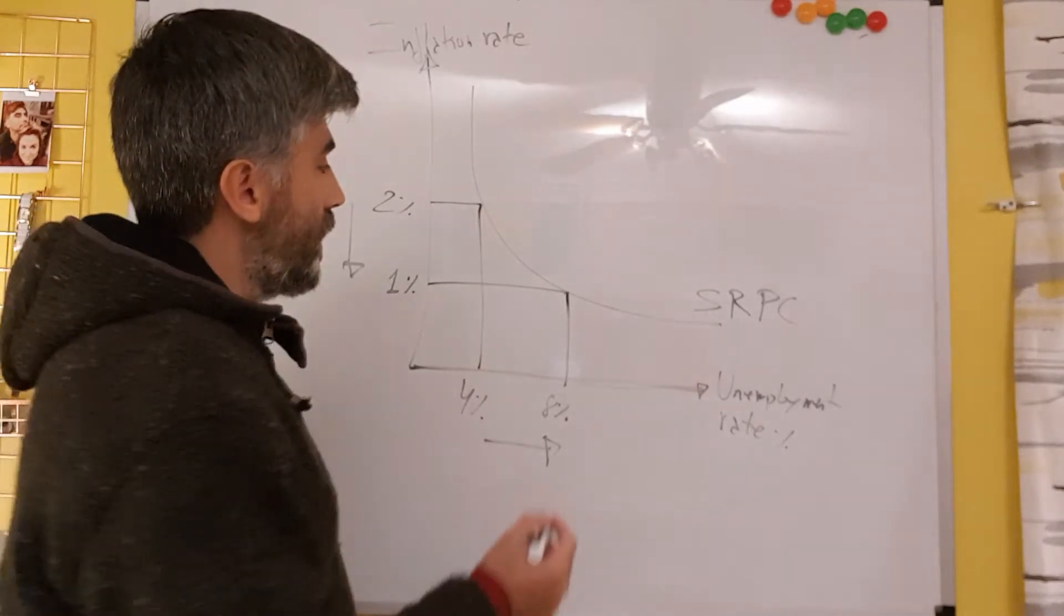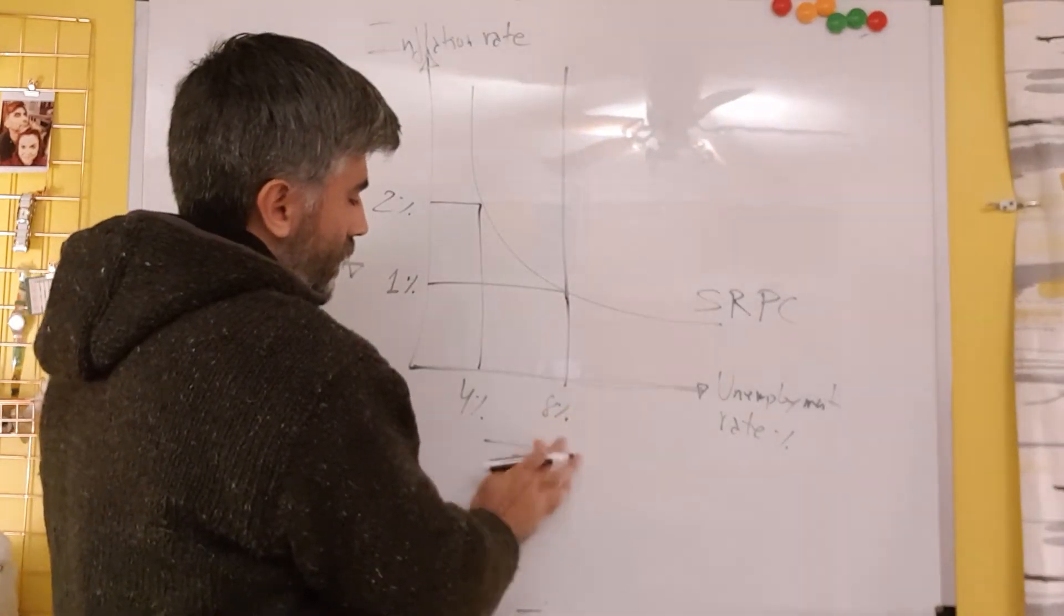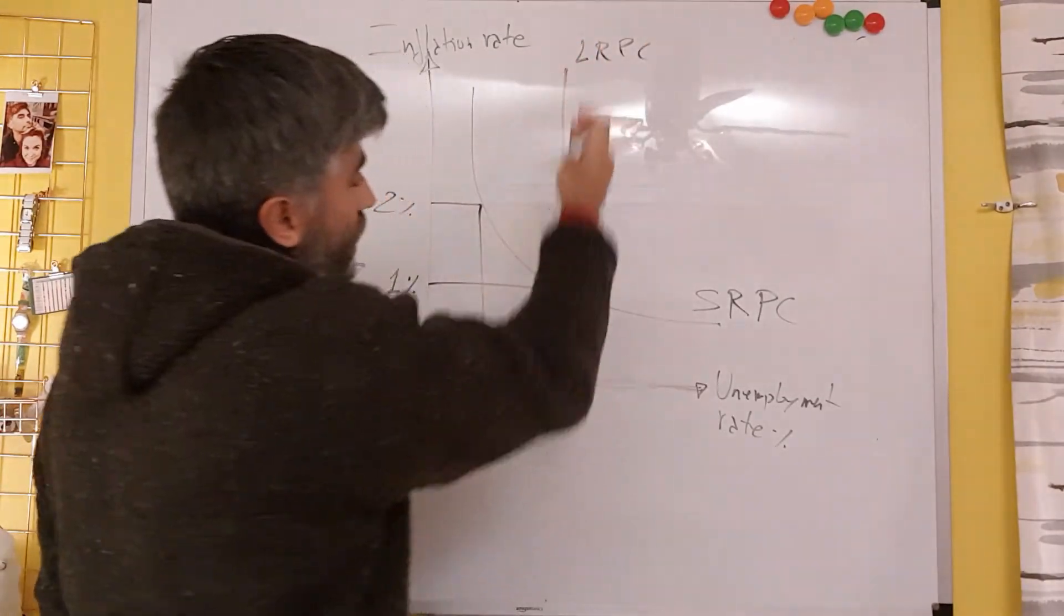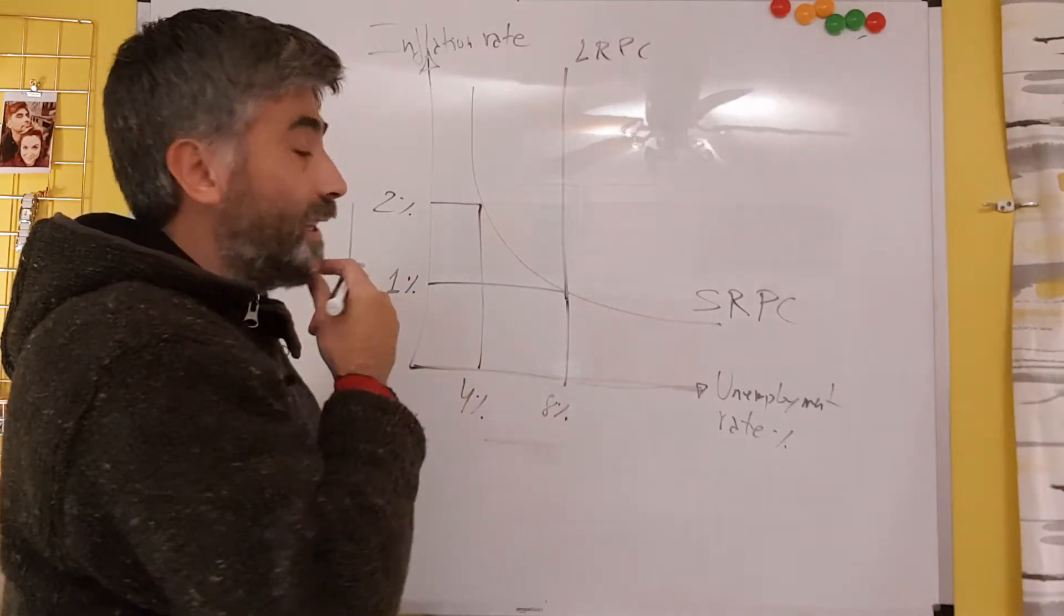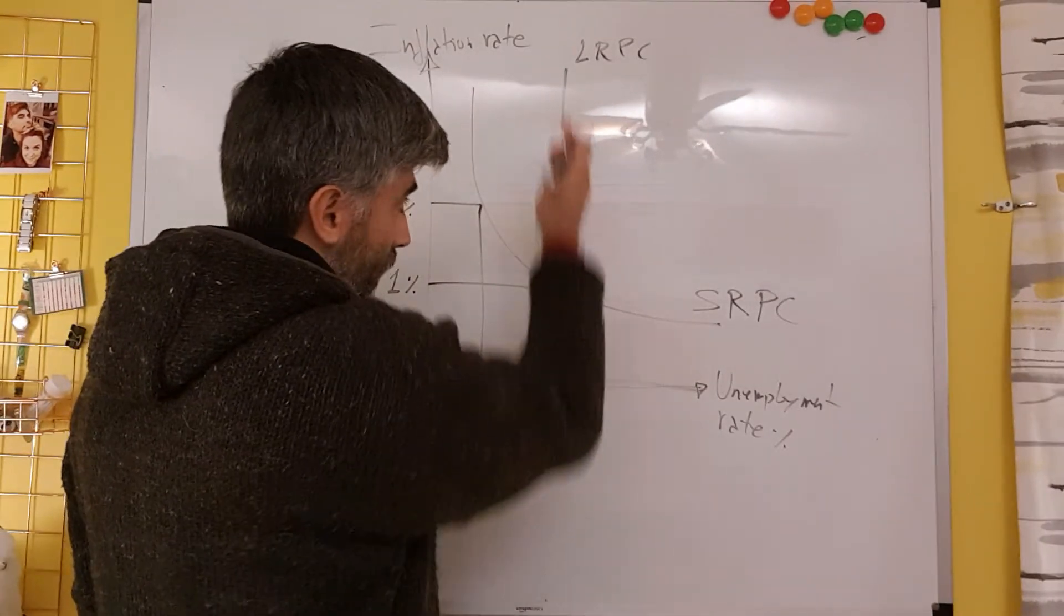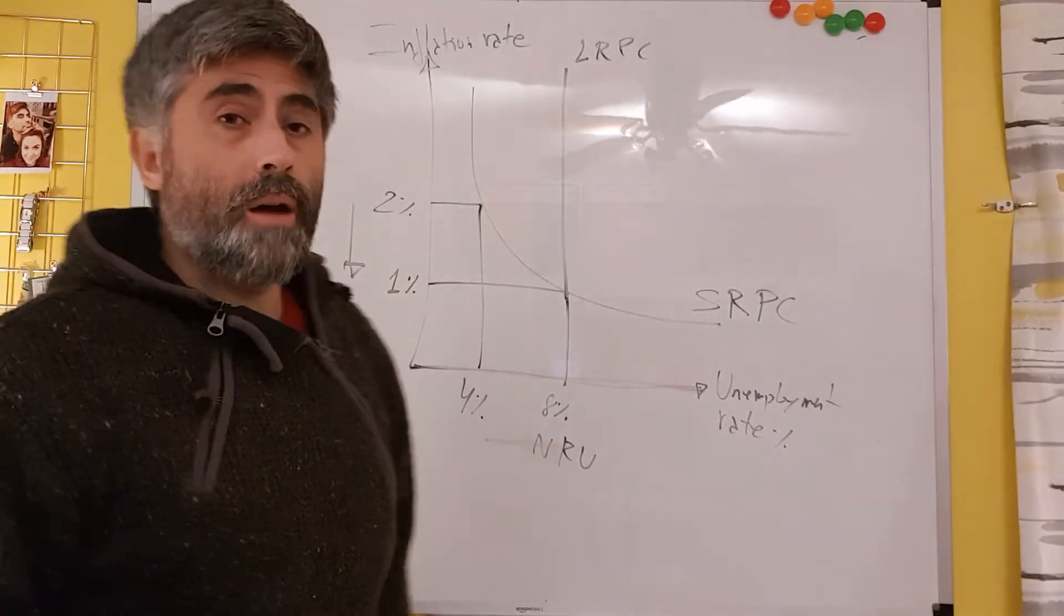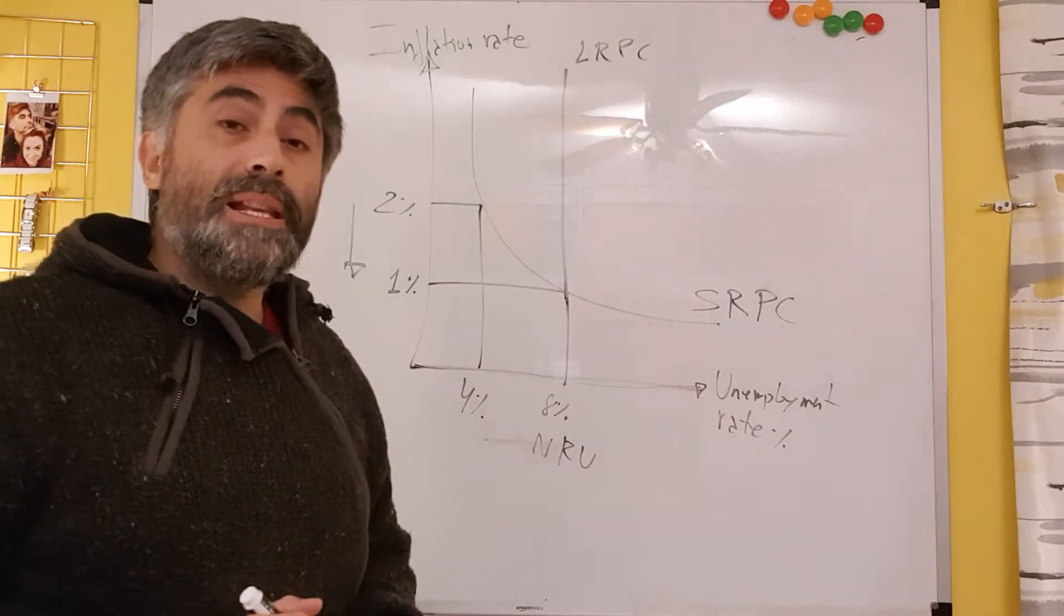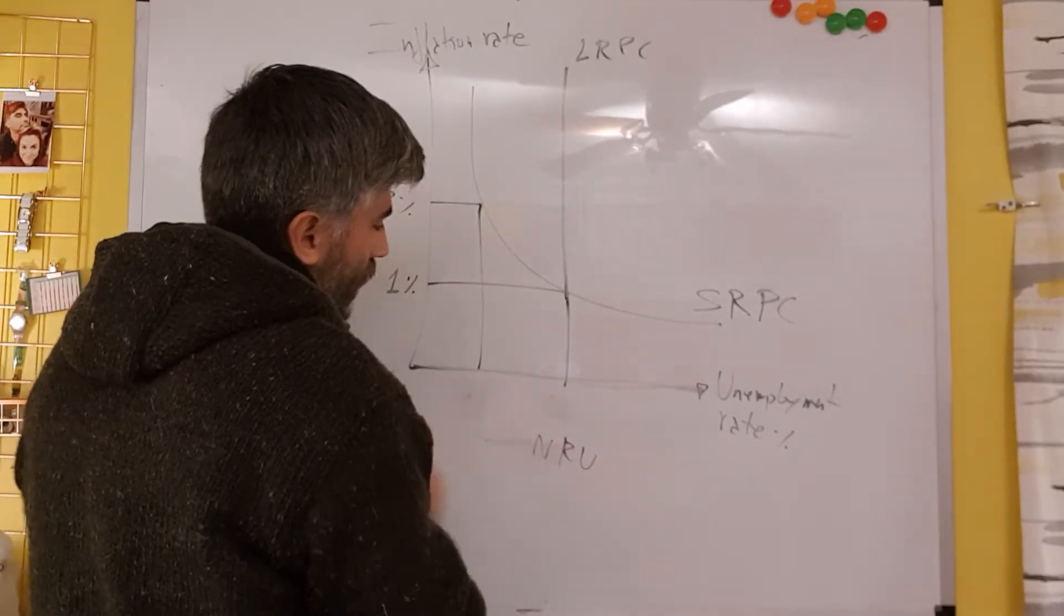That is the short run. The long run is an extra line that we make, something like that. And that is the long run Phillips curve. That vertical line is a long run Phillips curve. There's no relationship - it is perfectly inelastic. So there's no relationship whatsoever with inflation. And this will be the natural NRU, natural rate of unemployment. Meaning that no matter how much inflation you generate, you will never go below the natural rate of unemployment. It's believed that the natural rate of unemployment in the UK is 4%.